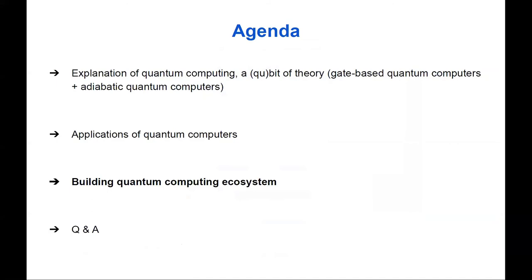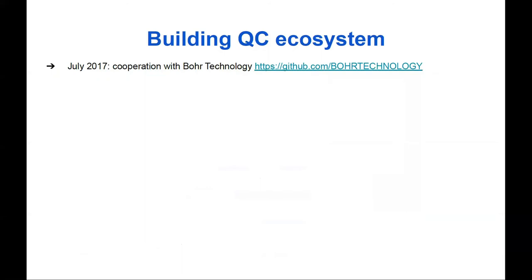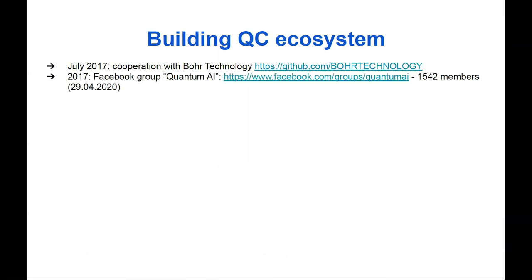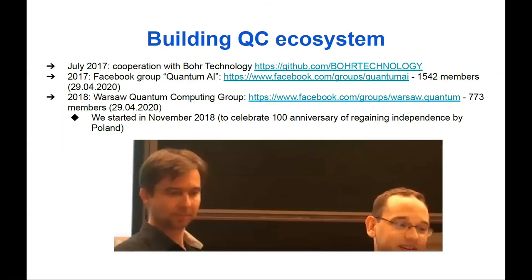Now at the end I'll tell you about building a quantum computing ecosystem, because it's important to learn about it as much as we can. My quantum computing adventure began in 2017 when I started cooperation with the Polish startup Board Technology. Later in 2017, I created a Facebook group called Quantum AI with more than 1,500 members. In 2018, I started running the Warsaw Quantum Computing Group — a Facebook group with more than 770 members. We started in November 2018 to celebrate the 100th anniversary of Polish independence. So far we've had 17 meetups, mostly on-site but recently webinars due to the pandemic, roughly once per month.